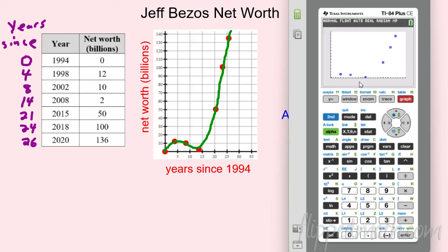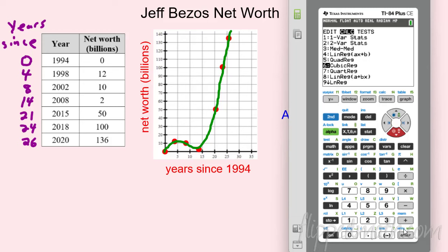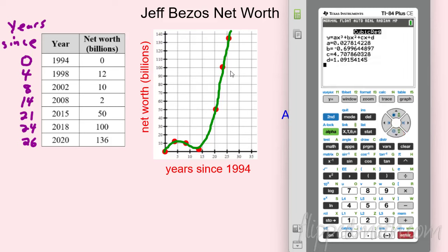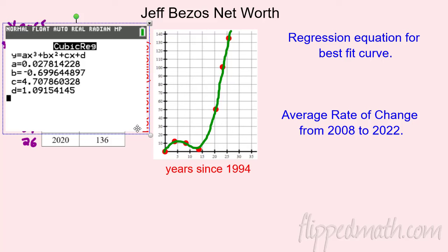There's a good picture of the data. Our goal is to model it with a regression. To run a regression, go back to Stat, slide over to Calc at the top. We've got all kinds of choices: linear regression, quadratic regression, cubic regression, quartic regression — all kinds of regressions. Since it looked like a cubic, we'll start with cubic regression. Hit Enter, it'll confirm you're pulling from L1 and L2. Come down to Calculate and run it.